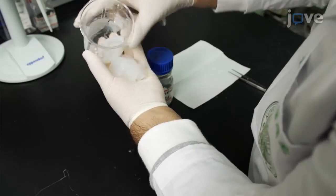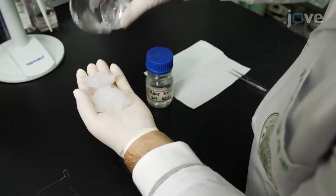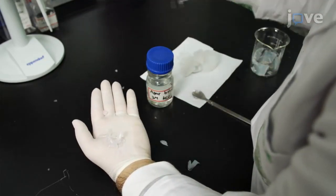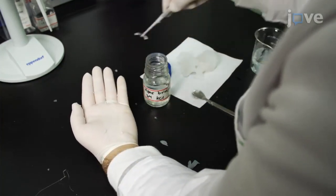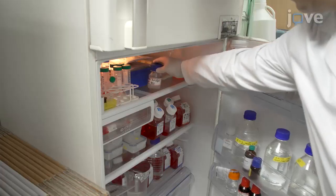The next day, carefully dig out the agarose potassium chloride loaded glass bridge from the hardened agarose salt. Store the bridge in a wide-necked bottle of 3 molar potassium chloride in the refrigerator.